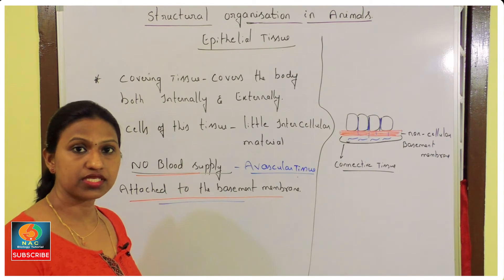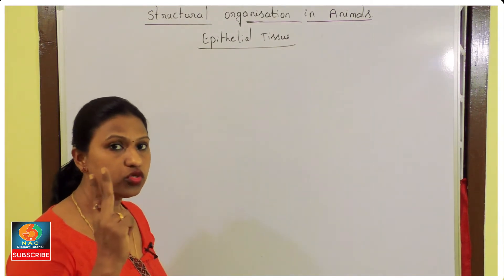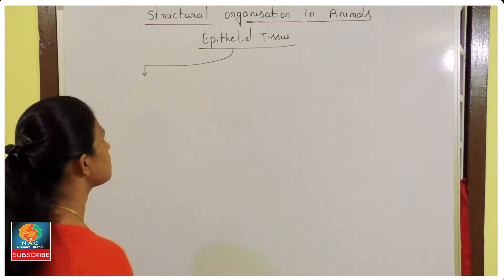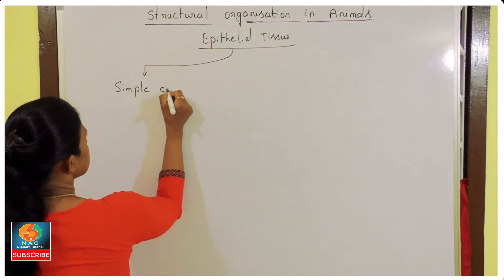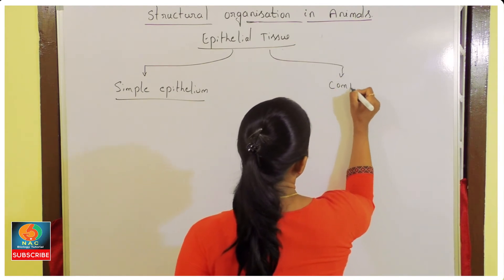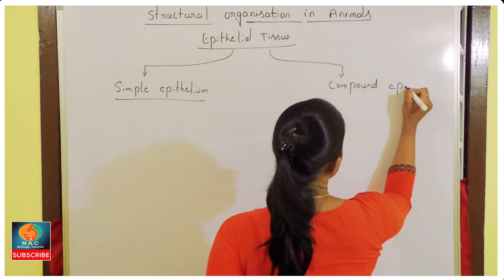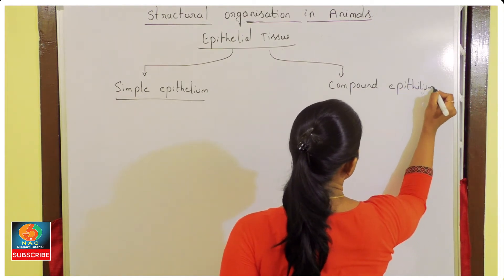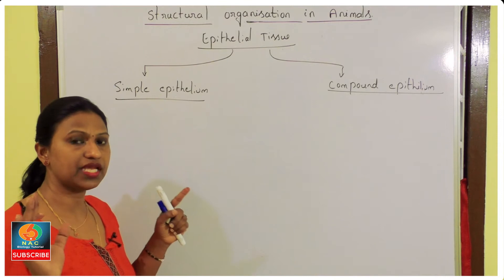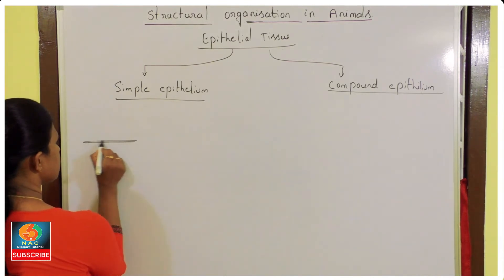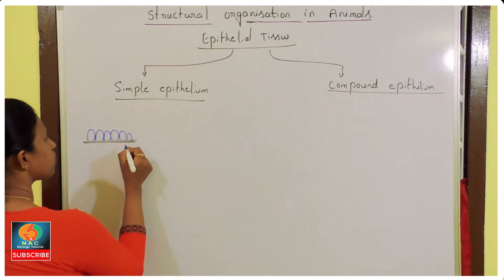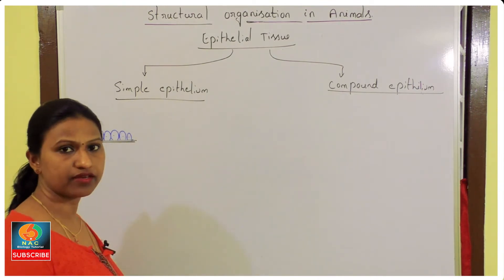There are two types of epithelial tissues based on the presence of layers of epithelial cells. The first one is simple epithelium and the second one is compound epithelium. Simple epithelium means cells are arranged in only one layer on the basement membrane — we call it simple epithelium.